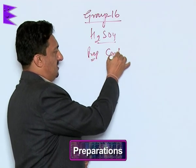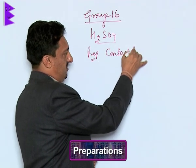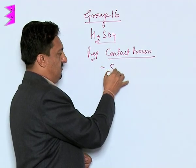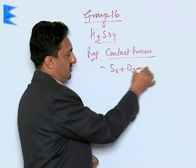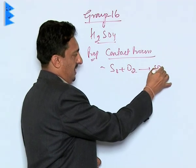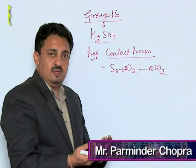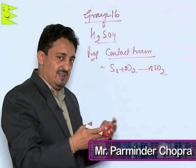It is prepared industrially by a process called contact process in which either the sulfur is heated in oxygen to give you sulfur dioxide, or this SO₂ is obtained as a byproduct of the roasting process from the metallurgical processes.